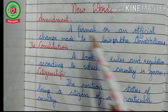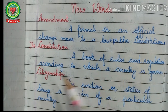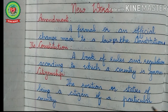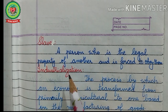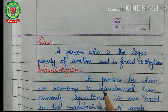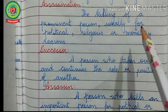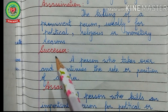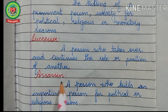Now let us discuss new words related to today's topic. Amendment: a formal or official change made to a law or the Constitution. Constitution: a book of rules and regulations according to which a country is governed. Citizenship: the position or status of being a citizen of a particular country. Slave: a person who is the legal property of another and is forced to obey them. Industrialization: the process by which an economy is transformed from primarily agricultural to one based on the manufacturing of goods. Assassination: the killing of a prominent person, usually for political, religious, or monetary reasons. Successor: a person who takes over and continues the role or position of another. Assassin: a person who kills an important person for political or religious reasons.